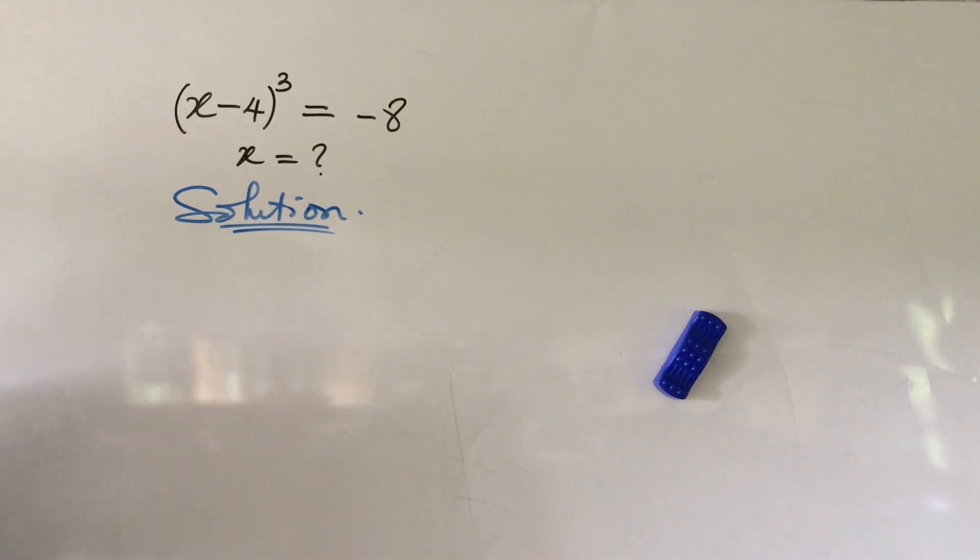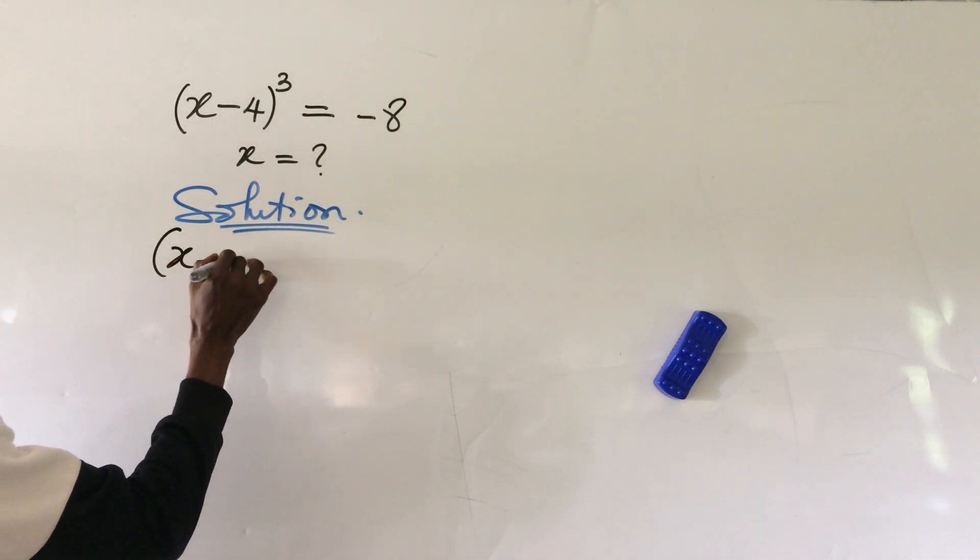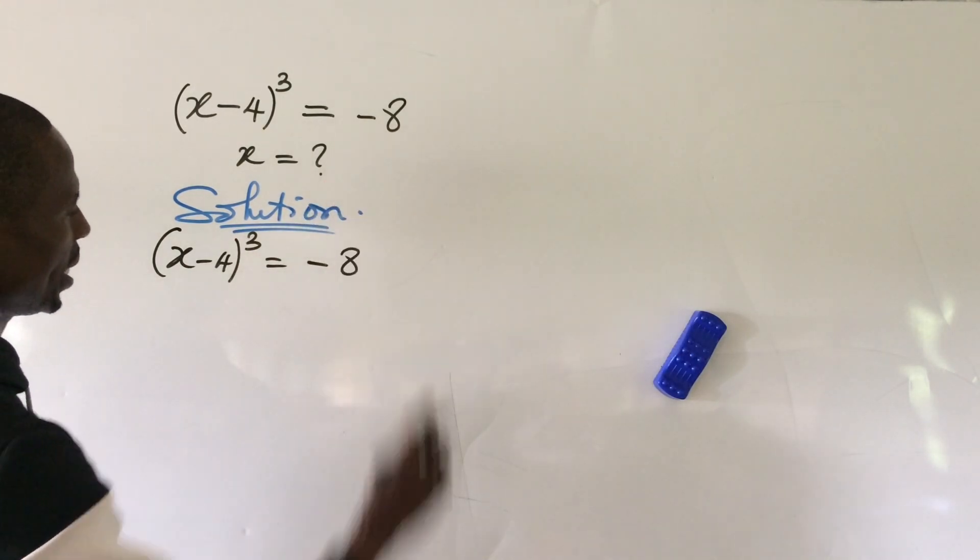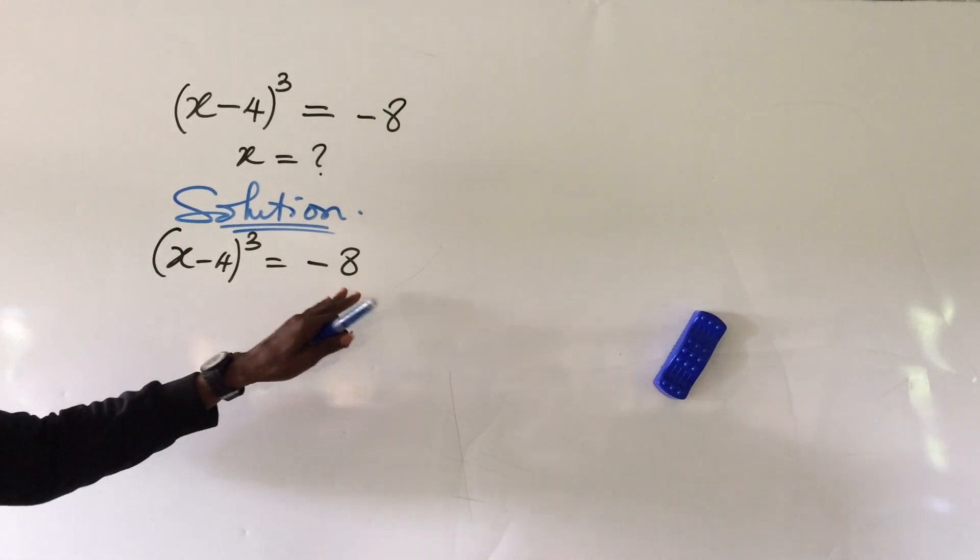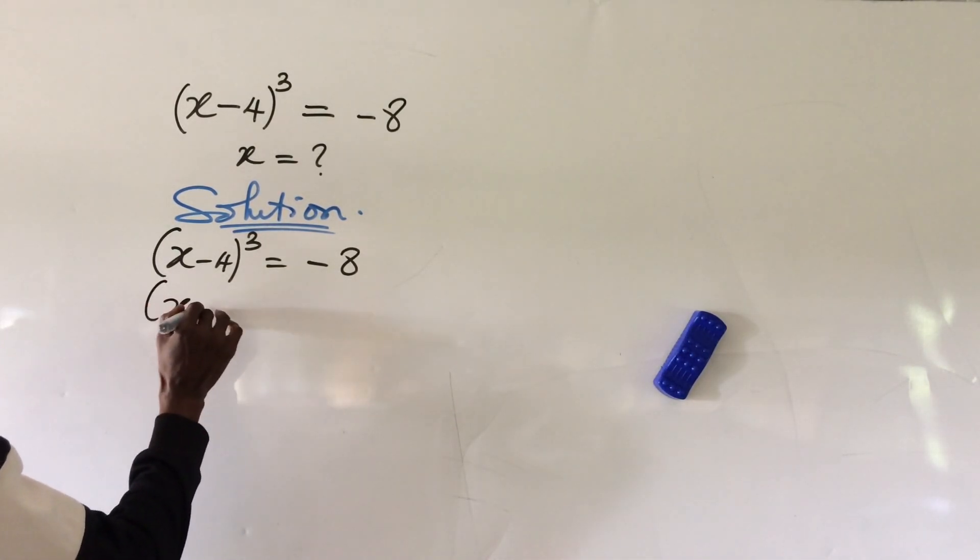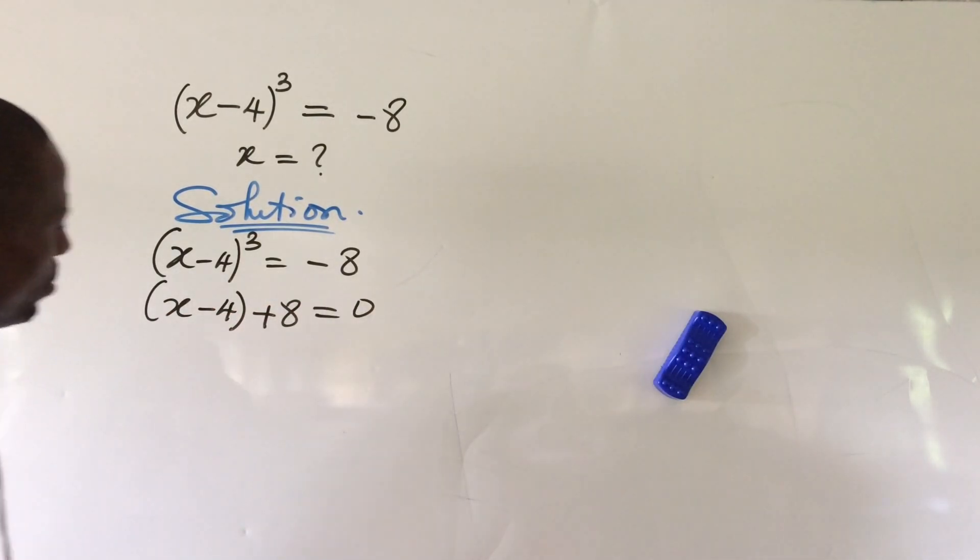So we put down our solution. Okay, solution. The question is, you have (x-4)³ = -8. Now the first thing we do here is to move this 8 to this side of the equation.